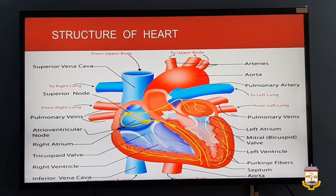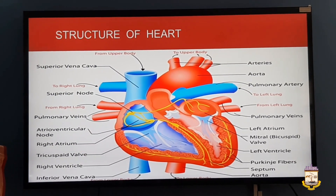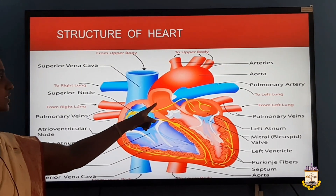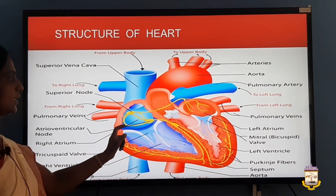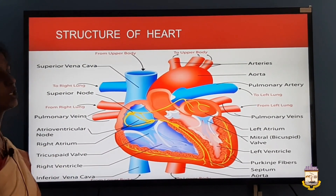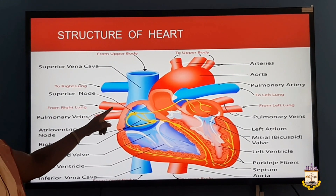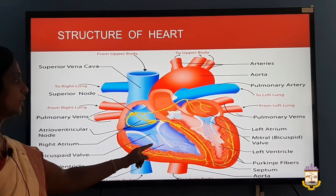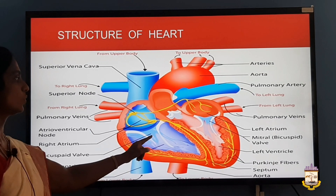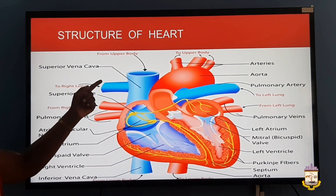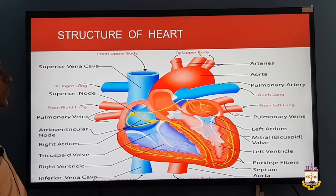The heart is divided into four chambers: two auricles and two ventricles. The upper chambers are called auricles and the lower chambers are called ventricles. The right auricle is connected to the right ventricle through the tricuspid valve, and the left auricle is connected to the left ventricle through the bicuspid valve.